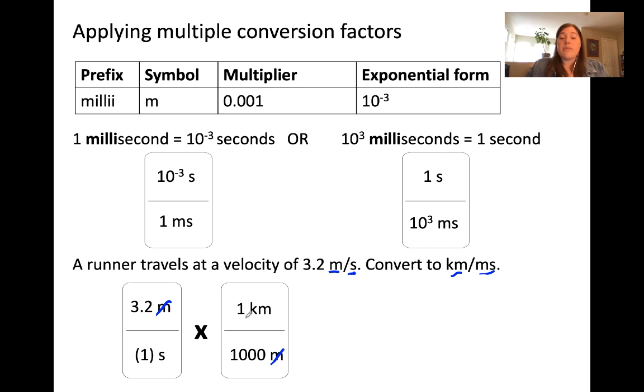But you'll remember from a few examples ago that one kilometer is equal to a thousand meters. That's where I got this information. Now, if I were to just do this calculation, I would be left with units of kilometers per second, which is not quite what we need. We need kilometers per millisecond. So taking it one step further,